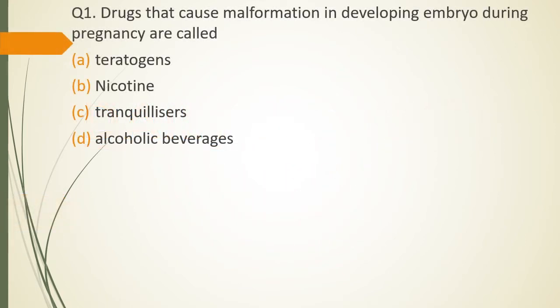Question No. 1: Drugs that cause malformation in developing embryo during pregnancy are called as Teratogens, Nicotine, Tranquilizers, Alcoholic beverages. The correct answer is option A Teratogens.